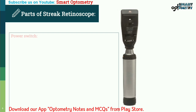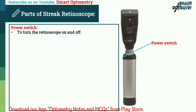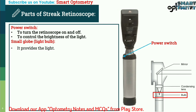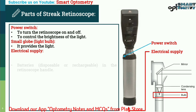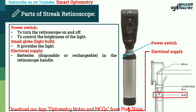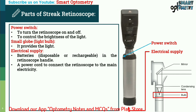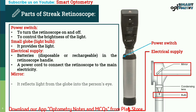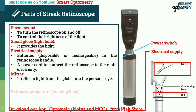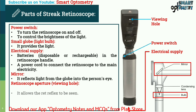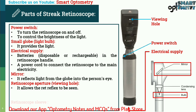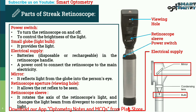The parts of the streak retinoscope are: the power switch, to turn the retinoscope on and off and control brightness of the light; the small globe or light bulb, which provides the light; the electrical supply, consisting of batteries — disposable or rechargeable — in the retinoscope handle, or a power cord to connect to the main electricity; the mirror, which reflects the light from the globe into the person's eye; the retinoscope aperture or viewing hole, which allows the red reflex to be seen; and the retinoscope sleeve, which rotates the axis of the retinoscope light and changes the light beam from divergence to convergence.